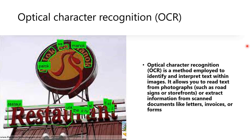Then comes OCR, optical character recognition. It is a simple method employed to identify and to interpret text within images. It allows you to read text from photographs. You can see some examples in front of you, and we can extract information from them. We can take a scanned document, letters, or invoices and extract the text and interpret it easily from that image.